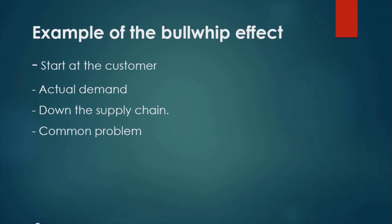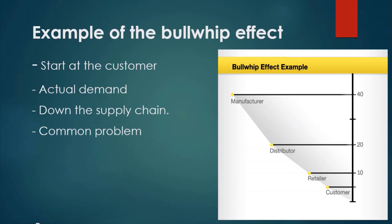Now we will see the example of the Bullwhip Effect. The actual demand for the product starts at the customer; however, upon that actual demand, distortion occurs going down the supply chain. Let's say the actual demand from a customer is 8 units. The retailer will order 10 units from the distributor — an extra 2 units to ensure they don't run out of stock. The distributor then orders 20 units from the manufacturer, buying in bulk to guarantee timely shipment to the retailer. The manufacturer then orders 40 units from their supplier to ensure economy of scale in production.